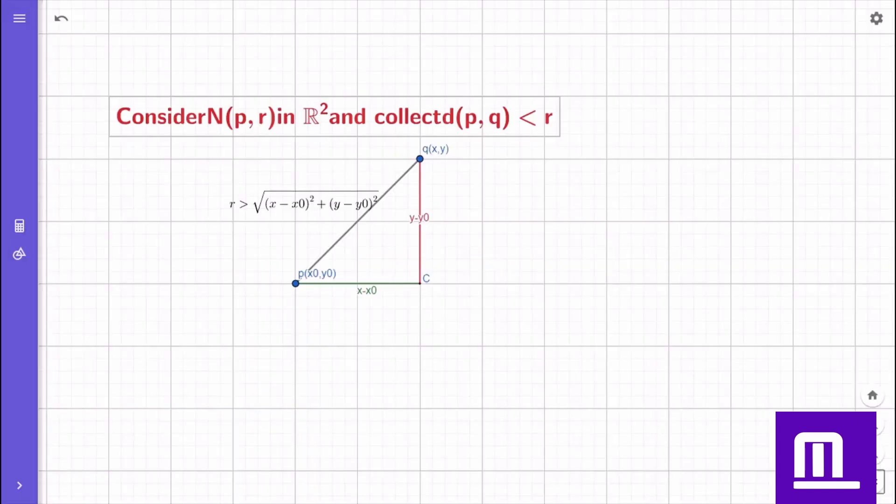Now, we move to n of p comma r in R square 2D plane. In R square p equals x not comma y not, and to construct n of p comma r, we should collect points q, x comma y, whose shortest distance from the point P is less than r.